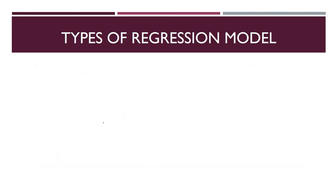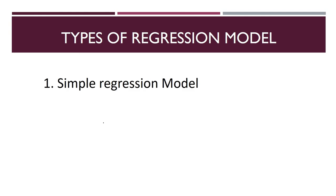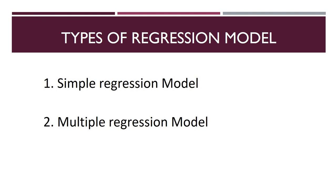When talking about regression models, there are two kinds: the simple regression model and the multiple regression model. In the simple regression model there is one independent variable and one dependent variable. In the multiple regression model — as the word 'multiple' suggests — there is more than one independent variable and one dependent variable, meaning more than one factor is influencing the dependent variable.